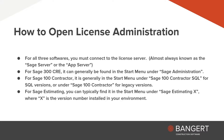For Sage 300, you're generally going to find it under Sage Administration. For Sage 100 Contractor, that's usually going to be under either Sage 100 Contractor SQL or Sage 100 Contractor, depending on whether you're looking for the SQL or legacy versions. And for Sage Estimating, you're going to find it under Sage Estimating X, where X is going to be the version number for your environment.